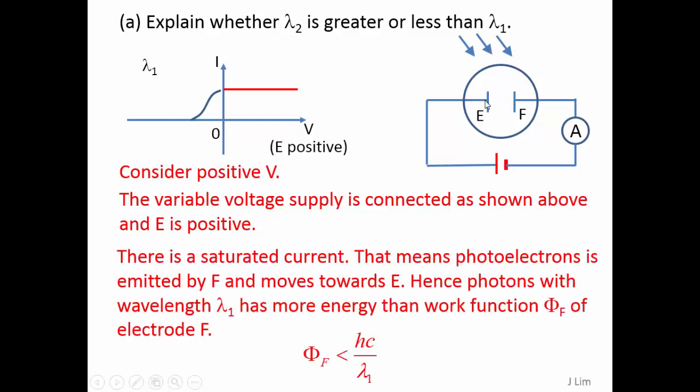There is a saturated current. That means photoelectrons are emitted by F and move towards E. Hence photons with wavelength lambda 1 has more energy than the work function of electrode F.